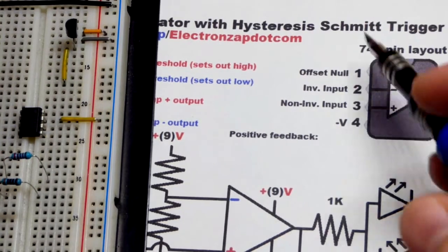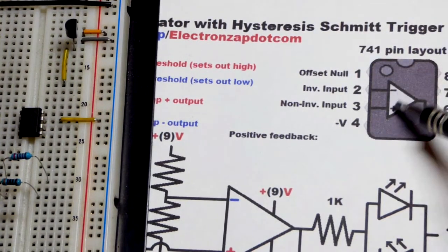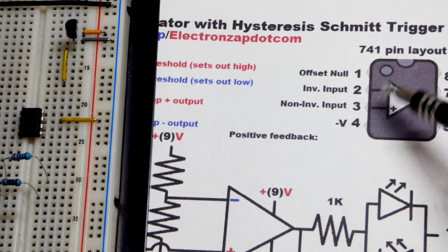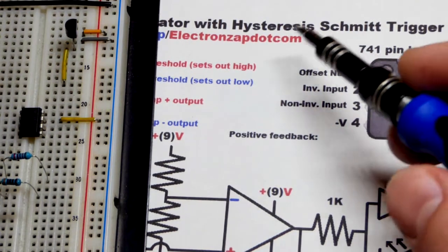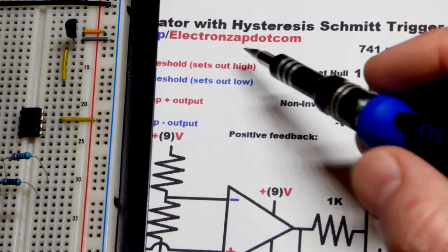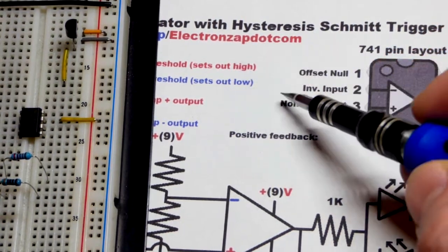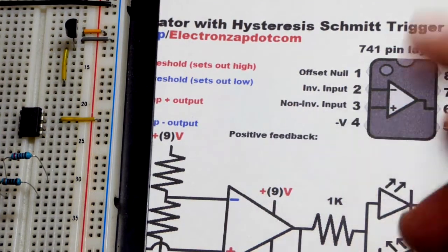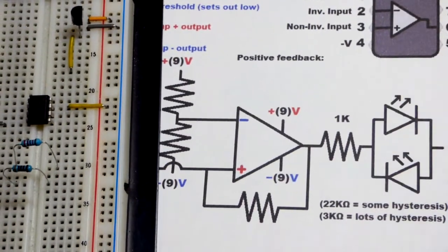In this video we're going to be looking at the Schmidt trigger using an op-amp. The Schmidt trigger depends on hysteresis, which depends on positive feedback.